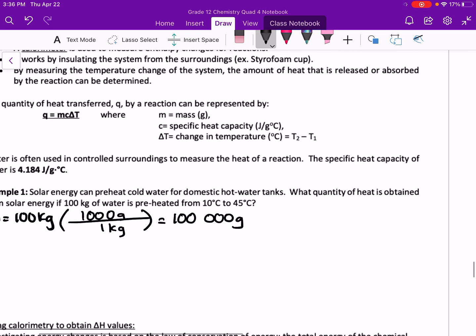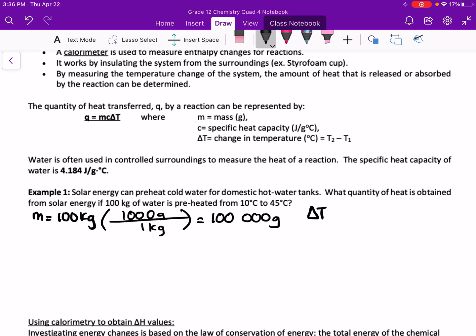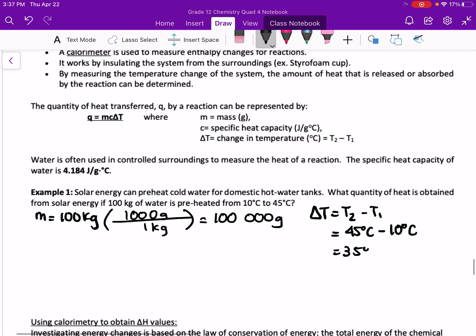We also know that we can calculate the change in temperature. Our delta T is equal to T2 minus T1, so 45 degrees Celsius minus 10 degrees Celsius is 35 degrees Celsius.